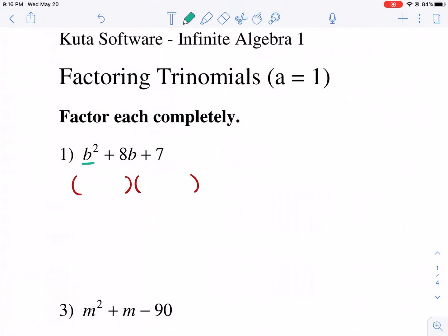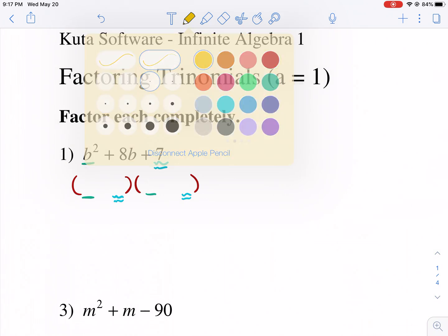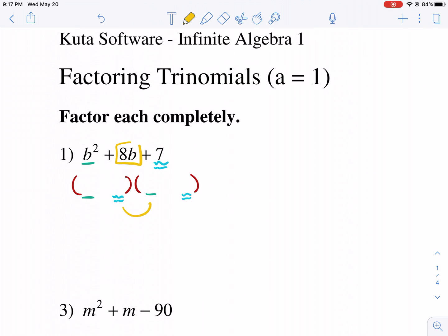Now, what happens here? Well, we learned earlier in foiling and the distribution property that when you multiply the first terms, you end up getting the b squared that you have here. The first terms in each parenthesis end up giving you the first term in the trinomial. So what about the last term? The last term is a result of multiplying the two second slots together. Now, what happens with this middle term? This middle term is a result of the sum of the inside and the outside terms.